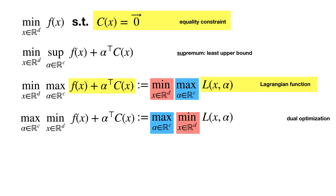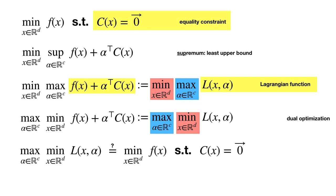It's worth thinking about why the primal saddle-point min-max form is equivalent to the original problem. The reason is that if the inner supremum can choose an alpha to maximize the score, it can always make the score infinitely bad for the outer minimization if the constraints are violated at all — defined as anything non-zero in c of x.